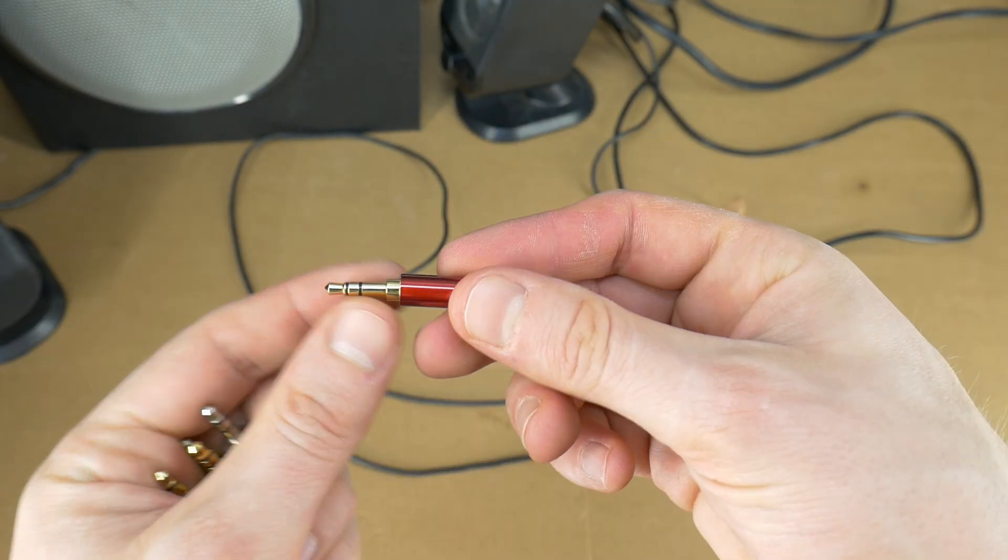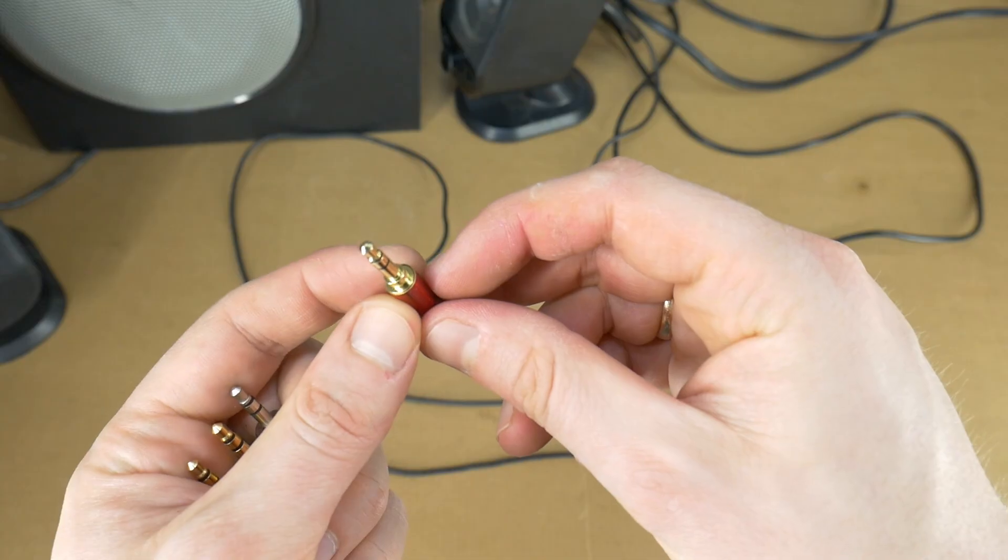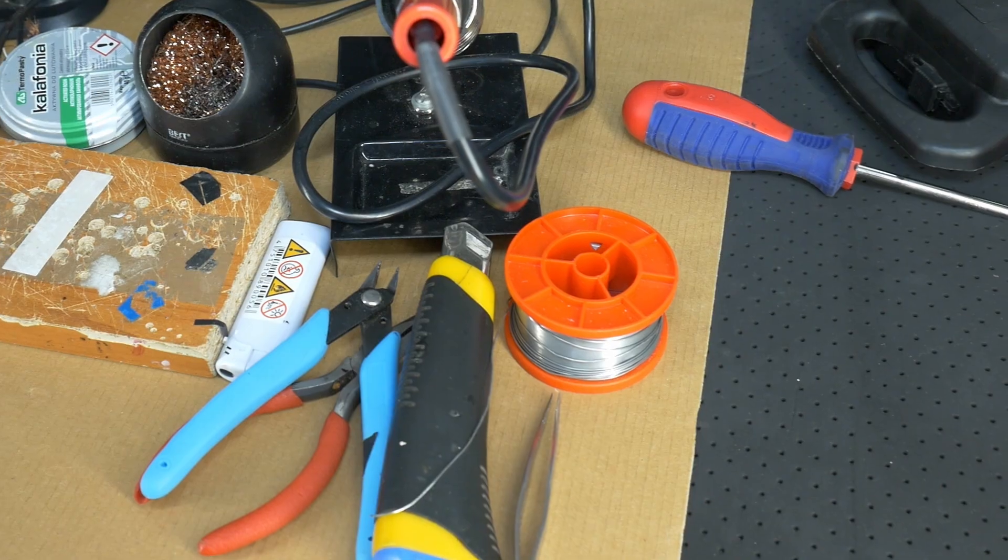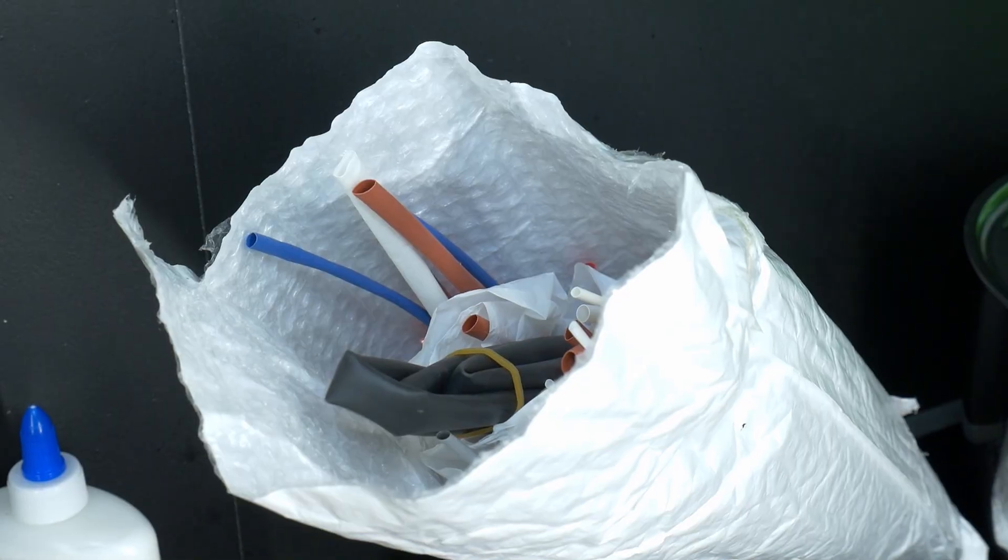There are different types available. A link to a suitable jack is in the video description. Of course, as with any DIY job, you'll need a few tools, a soldering iron, and some heat shrink tubing.